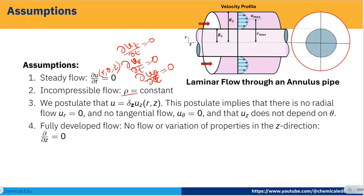We postulate that U_Z is a function of R and Z, because there is no flow in the theta direction. This postulate implies there is no radial flow (U_R = 0) and no tangential flow (U_theta = 0), and that U_Z does not depend on theta. Another assumption is fully developed flow: no flow properties vary in the Z direction, so ∂/∂Z = 0.